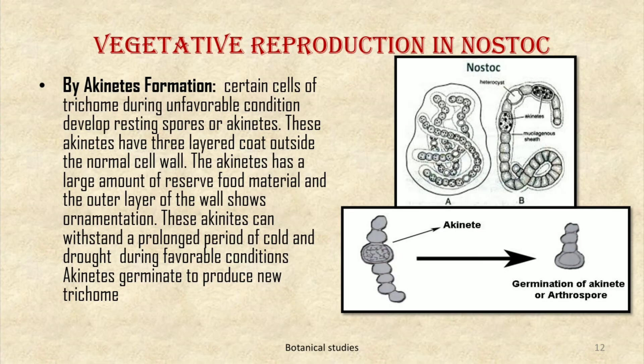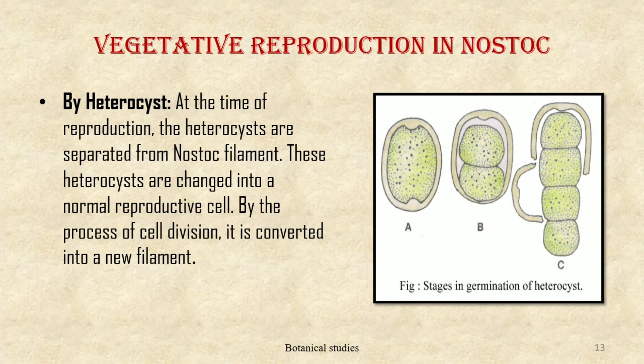Third, vegetative reproduction by akinete formation: certain cells of the trichome during unfavorable conditions develop resting spores or akinetes. These akinetes have a three-layered coat outside the normal cell wall. The akinetes have a large amount of reserve food material and the outer layer of the wall shows ornamentation. These akinetes can withstand a prolonged period of cold and drought. During favorable conditions, akinetes germinate to produce new trichomes.